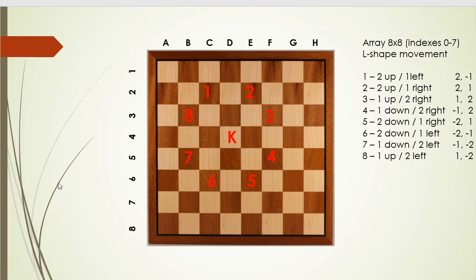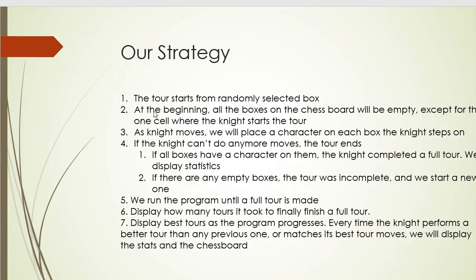Alright, so let's discuss our strategy to make the moves. So we will start the tour by randomly selecting a box. Then at the beginning all the boxes on the chess board will be empty except for the cell in which the knight starts the tour. And as knight moves we will place a character on each box that the knight steps on. So we will replace the empty squares with a character of the knight. And if the knight can't move anymore then the tour ends. And if all boxes have a character on them then the knight completed a full tour. And we can display the statistics.